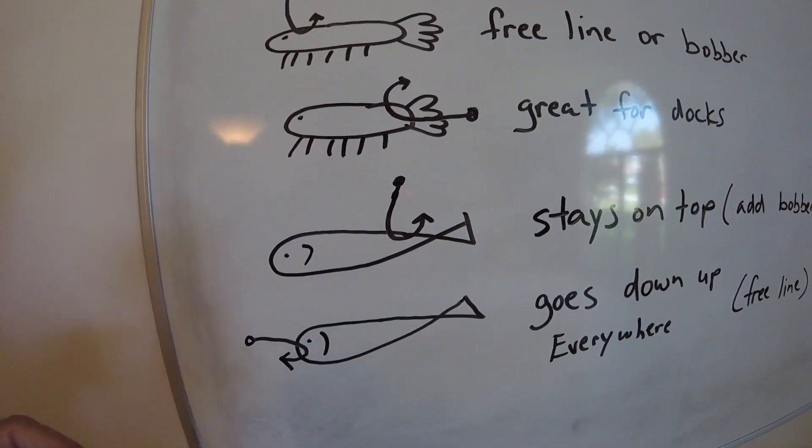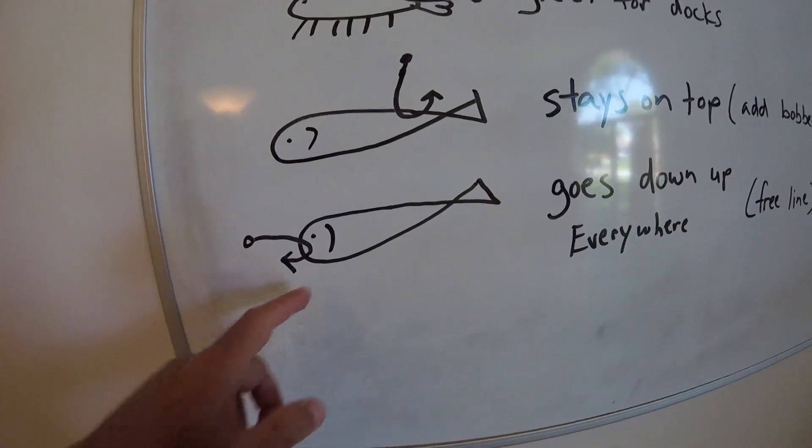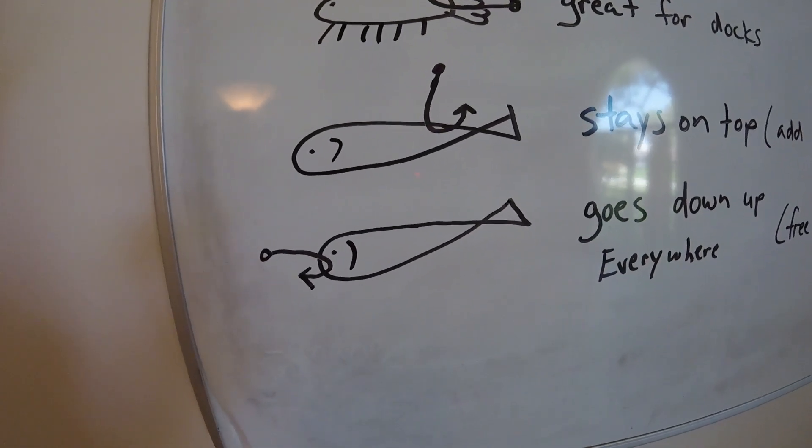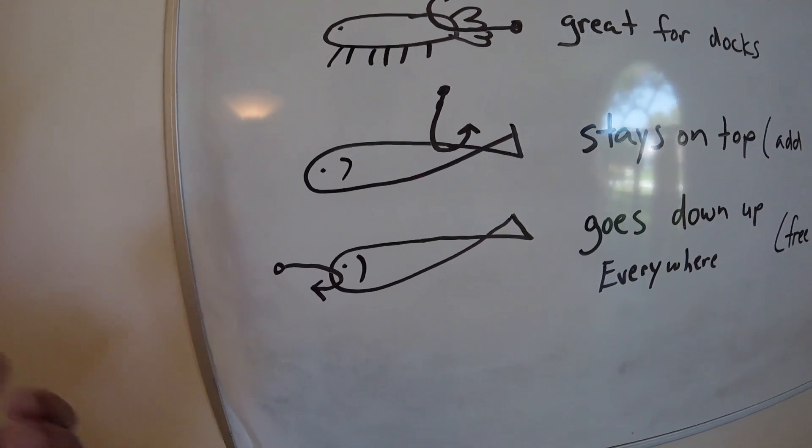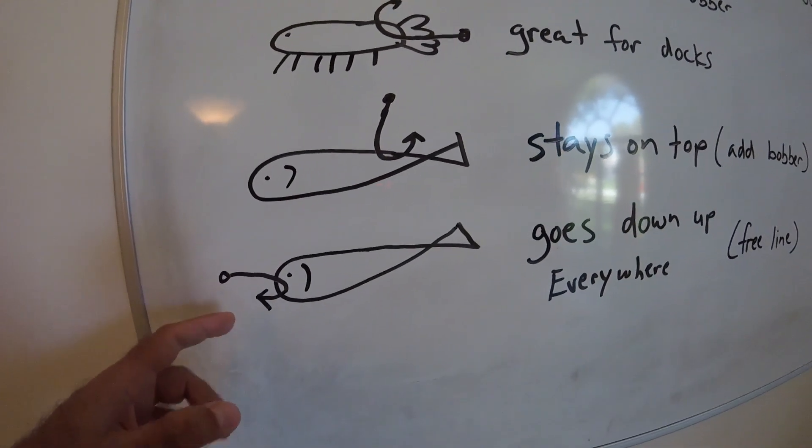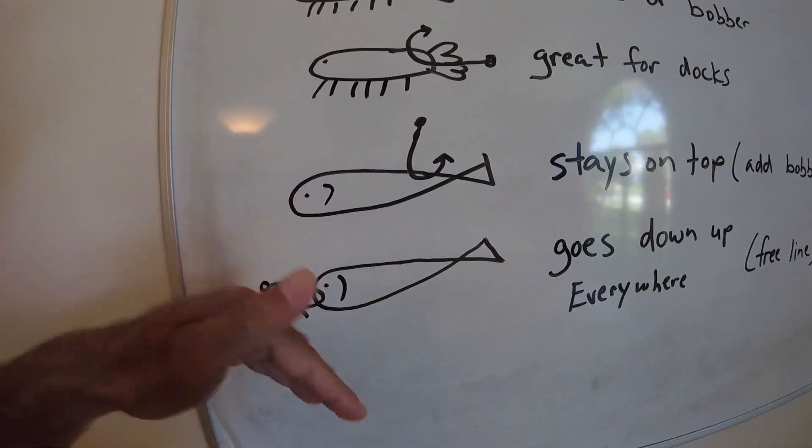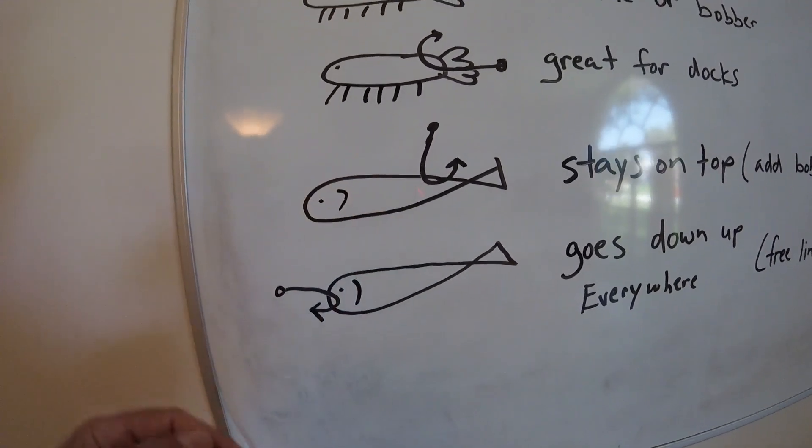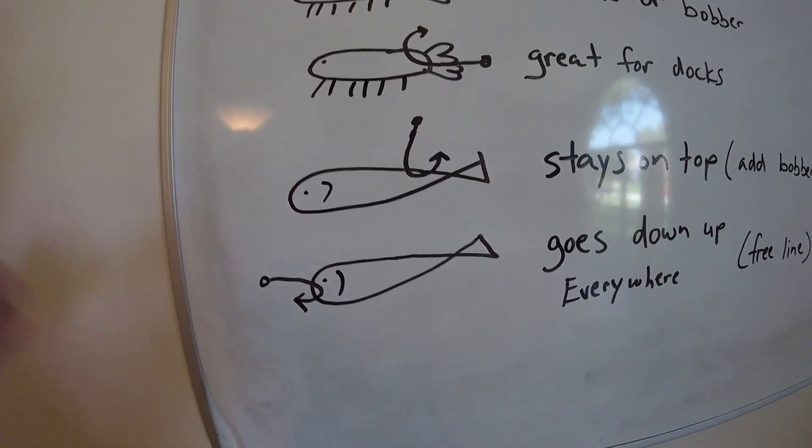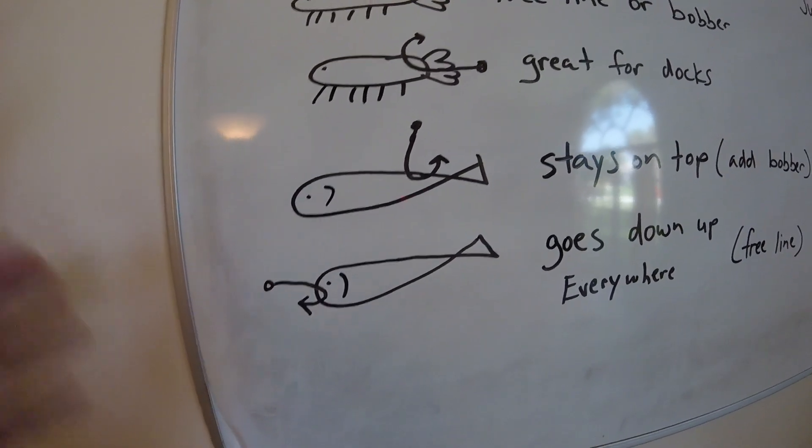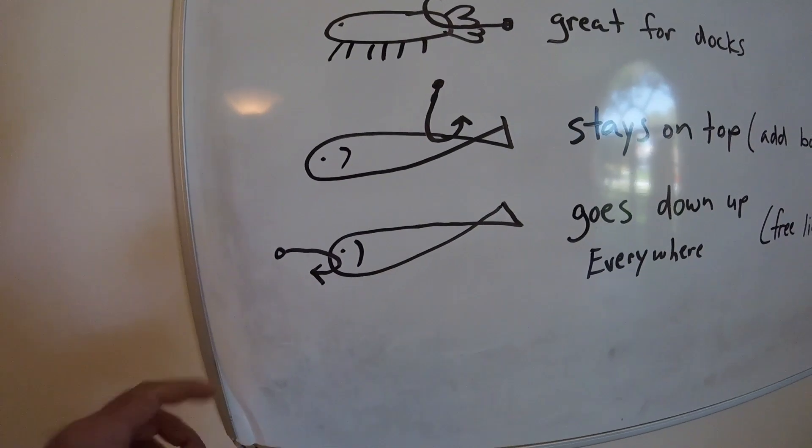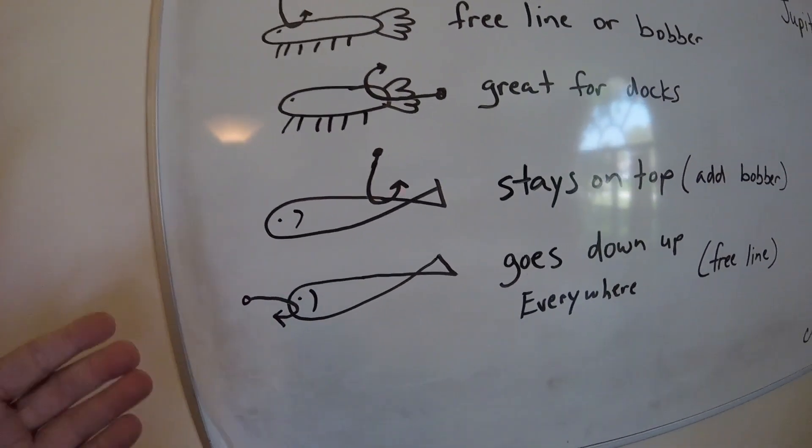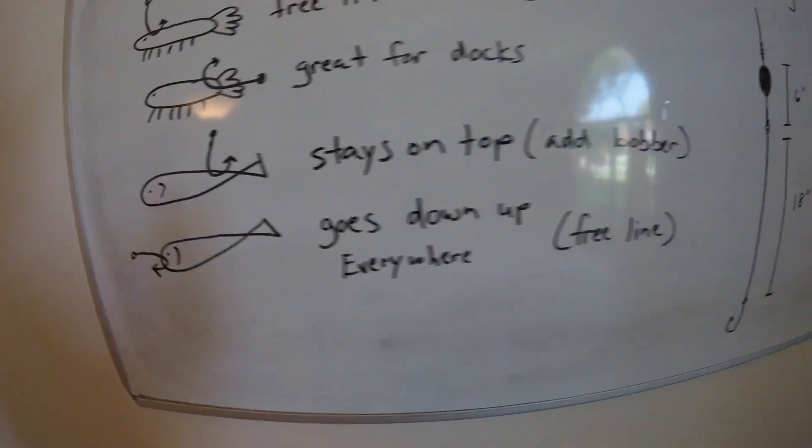When free lining mullet, you can hook them in the nose and they'll go everywhere. You have to know what kind of fish it is. If you hook a croaker, they want to dive down, so unless you want to fish the bottom, you might want to put a croaker tail hooked underneath a bobber. Same with pinfish—pinfish underneath a bobber is deadly for snook. They love those fish. Hook placement on your live bait is important, so you have to understand that.